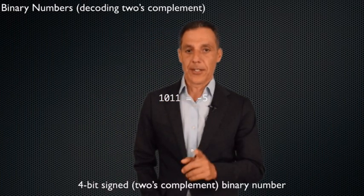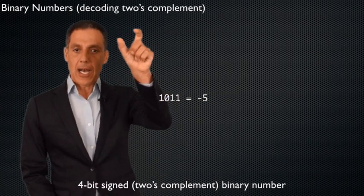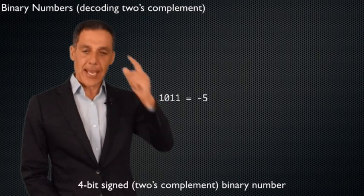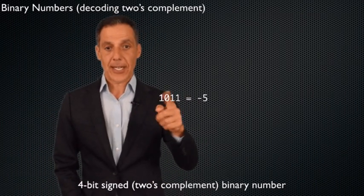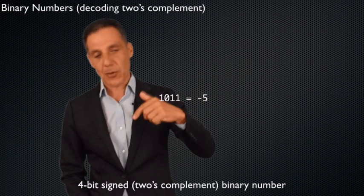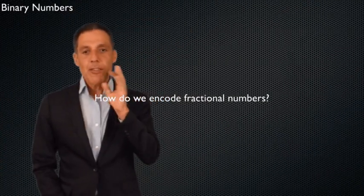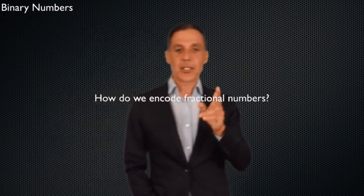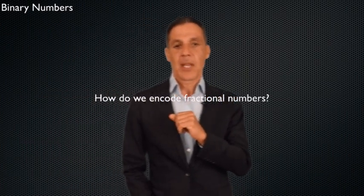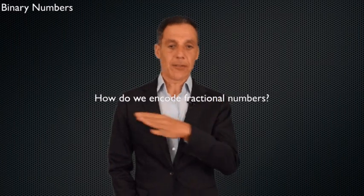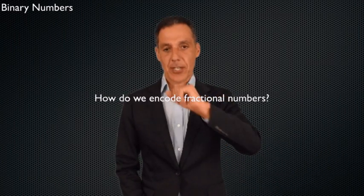Practice going between binary numbers and decimal numbers, and make sure you understand how two's complement addition, subtraction, and complementing works. From now on we're going to stick with two's complement as our representation for negative numbers.